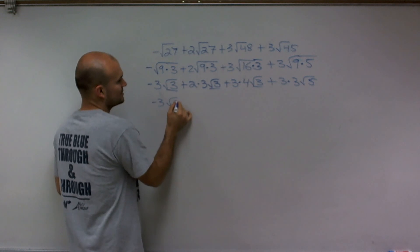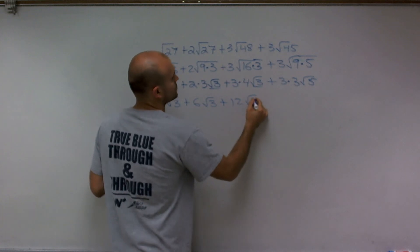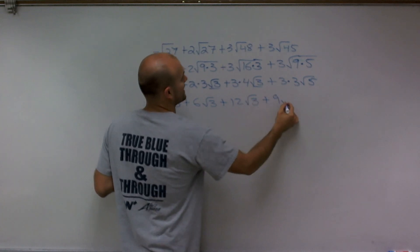So I have negative 3 square root of 3, plus 6 square root of 3, plus 12 square root of 3, plus 9 square root of 5.